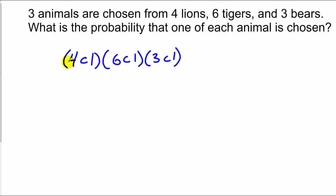So this is the total number of ways I can get one animal being chosen from each group over the total number of choices of three animals from this larger group, which is 13, choose three. You can pop that into your calculator and get an answer. I'm just going to leave the skeleton of the problem right here as your answer.